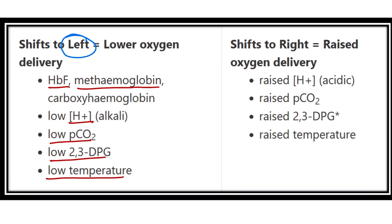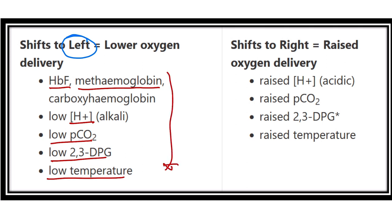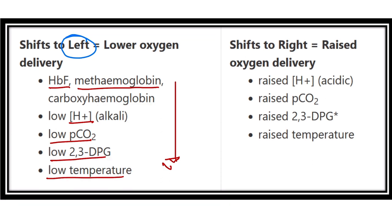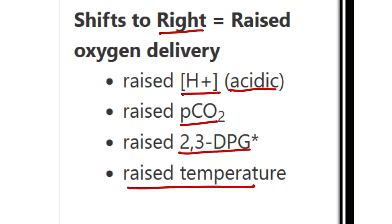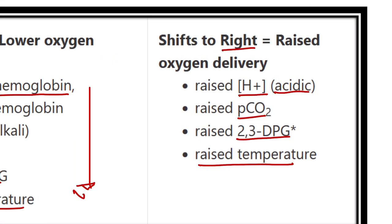In all these conditions there is a reduction of certain substances, causing reduced oxygen delivery — that means a left shift of the oxygen hemoglobin dissociation curve. On the other hand, the curve shifts to the right when different substances increase, such as raised hydrogen ion concentration (acidic condition), raised partial pressure of CO2, raised 2,3-DPG, and raised temperature.